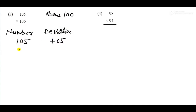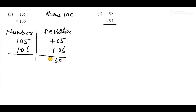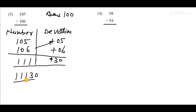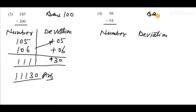Question 3. Numbers 105 and 106. Base is 100. Deviation for 105 is plus 05, deviation for 106 is plus 06. Multiply: 6 times 5 equals 30. Add crosswise: 106 plus 5 equals 111. Answer is 11130.